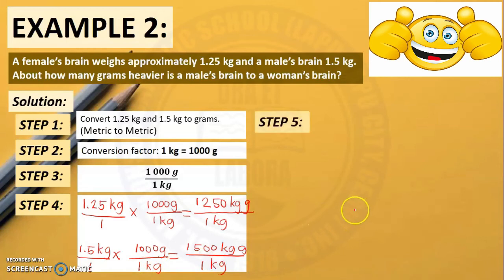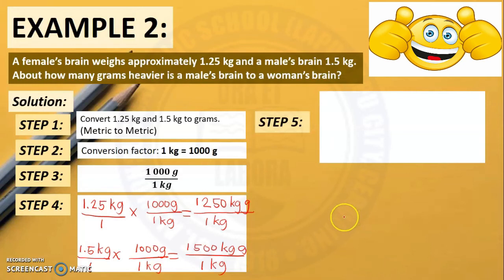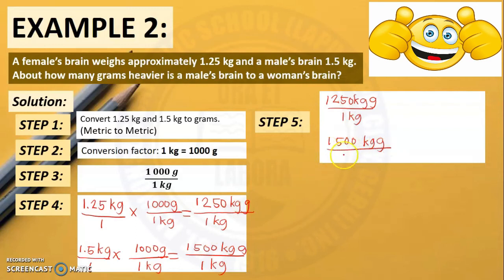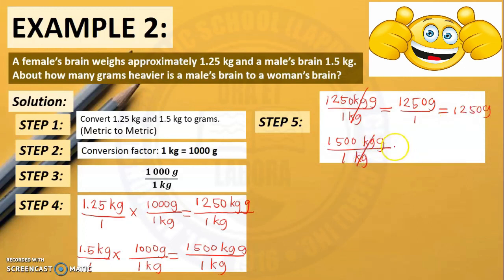Step 5: Cancel the units that appear on top and bottom. For the first: 1,250 kilograms-grams over 1 kilogram — cancel kilograms — equals 1,250 grams over 1, or just 1,250 grams. For the second: 1,500 kilograms-grams over 1 kilogram — cancel kilograms — equals 1,500 grams over 1, or just 1,500 grams. And we are done with step 5.